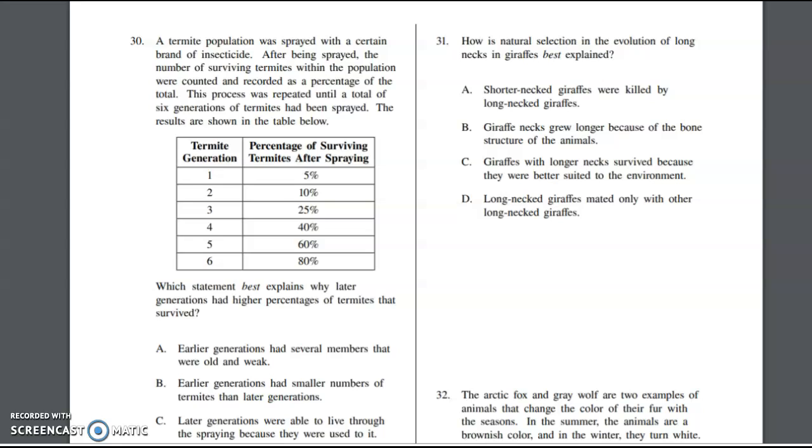Number 31 says how is natural selection in the evolution of long necks and giraffes best explained? Again, this is survival of the fittest. Whoever is best suited for their environment is going to survive longer and pass on their genetic traits to their offspring. C says giraffes with longer necks survived because they were better suited to their environment. Yes, they were able to reach the leaves up high, so when food got scarce, they could still eat. Then more of those longer neck giraffes survived, so they ended up mating with each other and passing on that trait to their offspring. C is our best answer there.